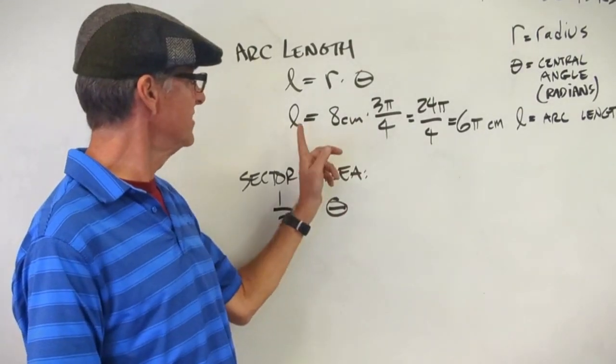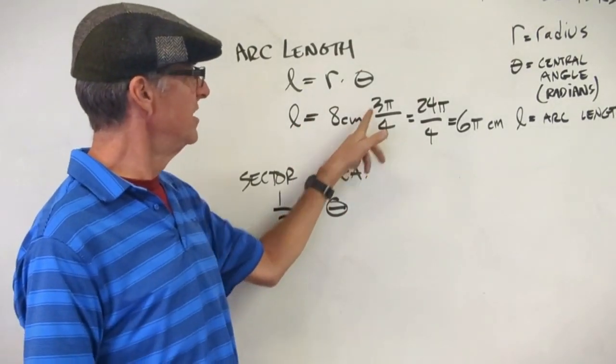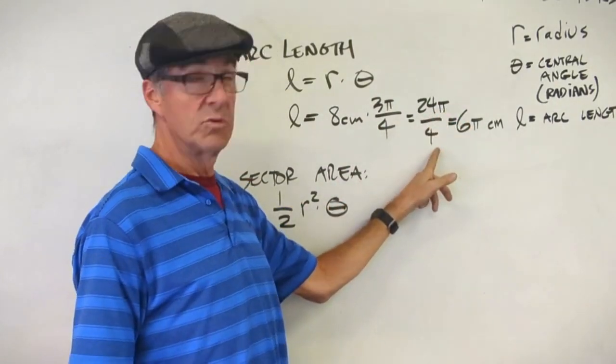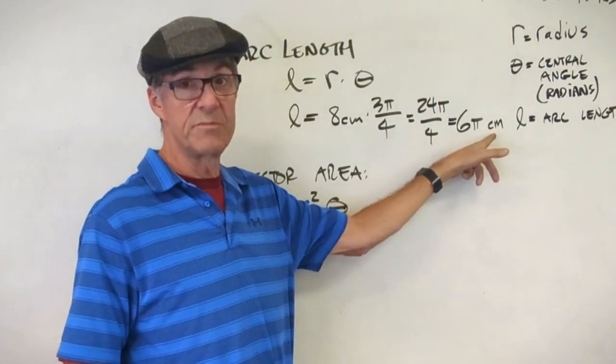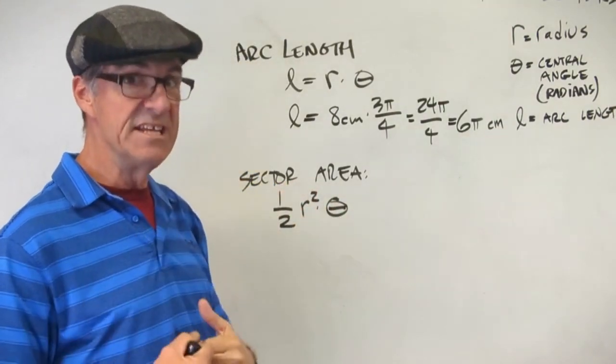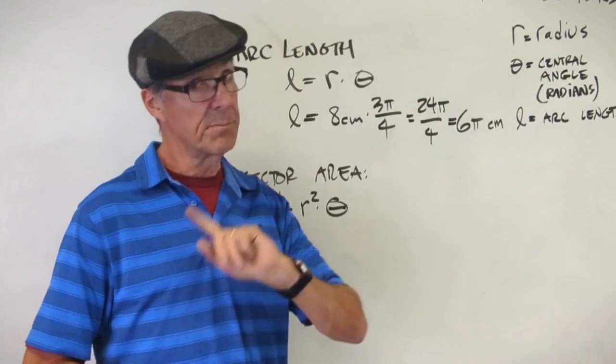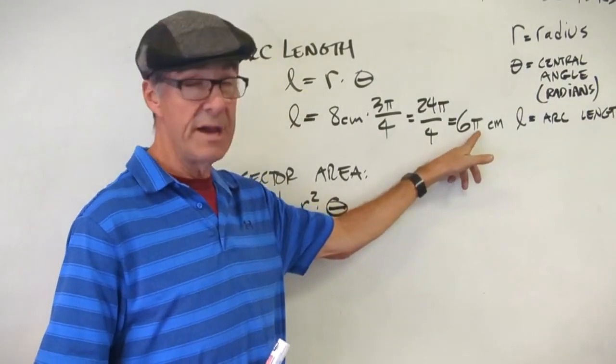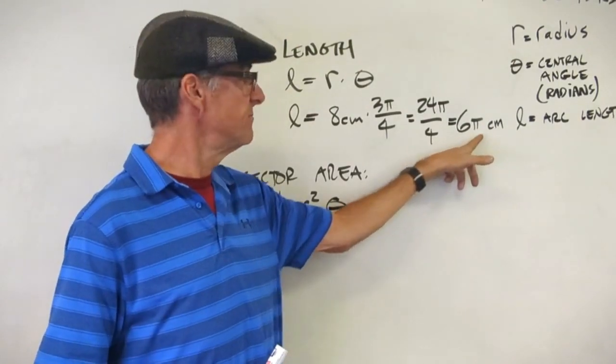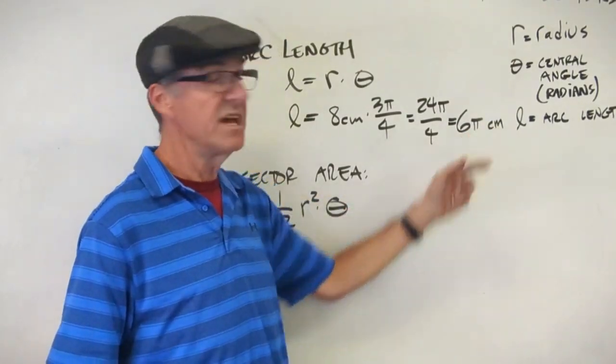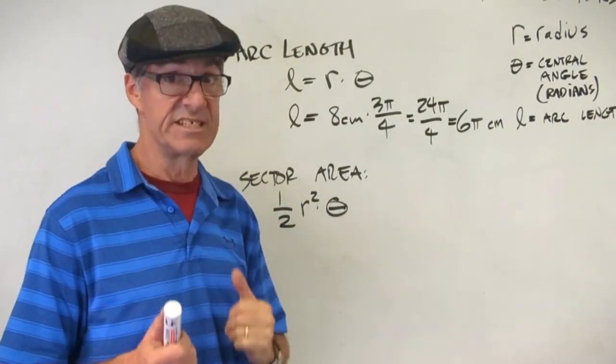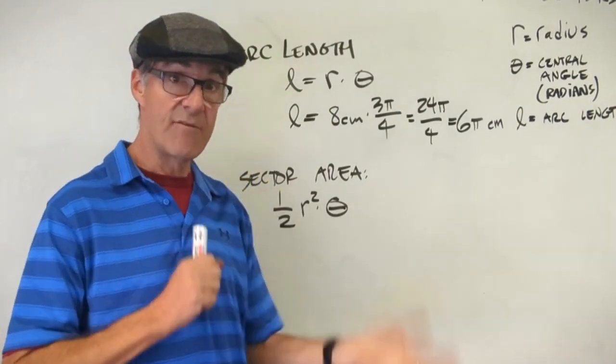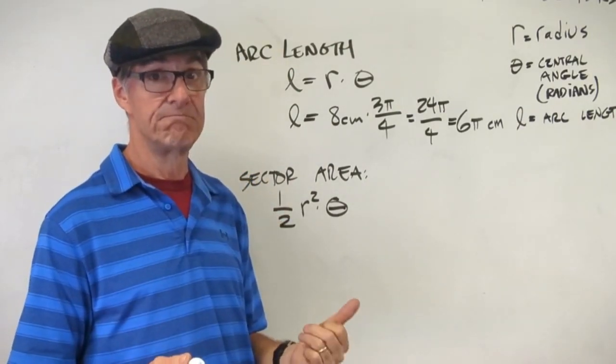When I do this, I do my plug-in step. Arc length L equals 8 centimeters times 3π over 4 radians, which gives me 24π over 4, which reduces down to 6π centimeters. And you can leave your π's in the answer. In fact, your prompt for that is if it says give your exact answer, don't use the π button on your calculator and get some decimal approximation. Write 6π centimeters, because that's exact. That's one of the benefits of staying in radians: you don't have approximate, you have exact answers.